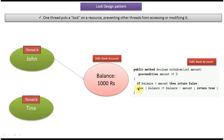Suppose Tina's thread B is also trying to withdraw 1000 rupees at the same time. Thread A allows thread B to execute and goes to sleep at the else condition, so it did not retrieve any money yet. The balance is still 1000 rupees. Thread B enters this method, checks amount 1000 rupees greater than 0 — yes — and it is not less than balance, so it comes to balance minus amount: 1000 minus 1000 equals 0. Balance becomes 0 and Tina withdraws 1000 rupees.